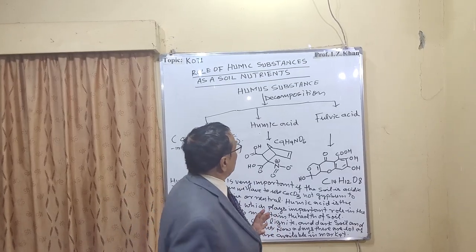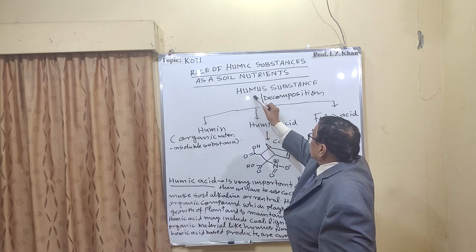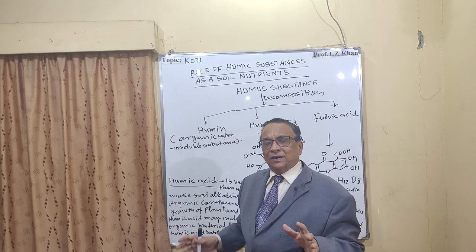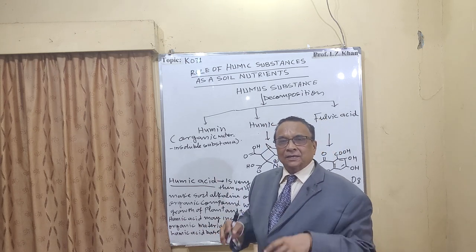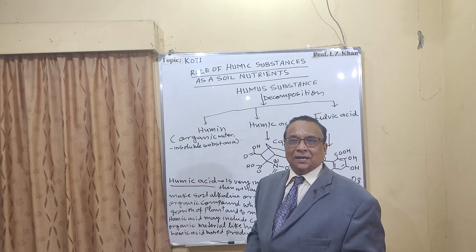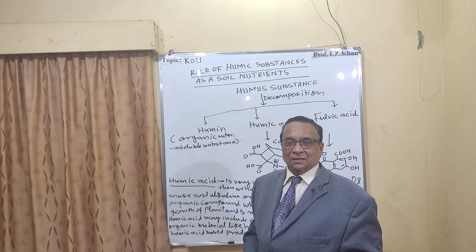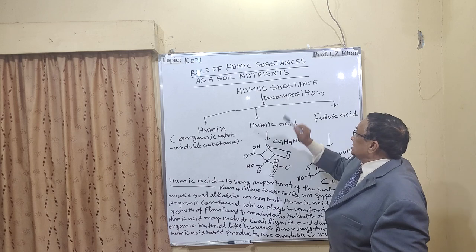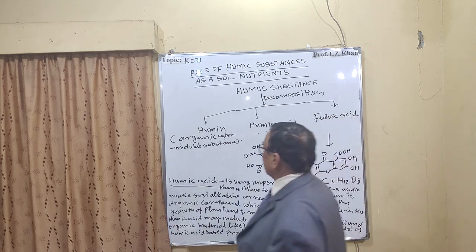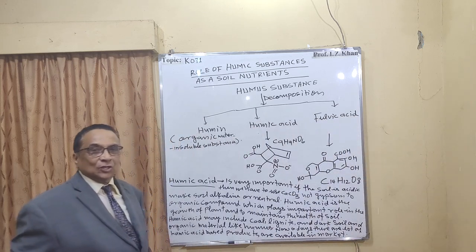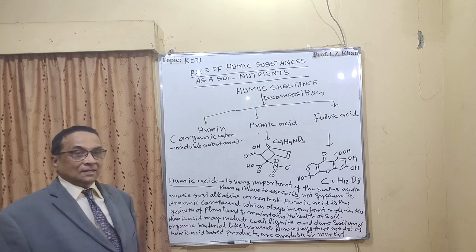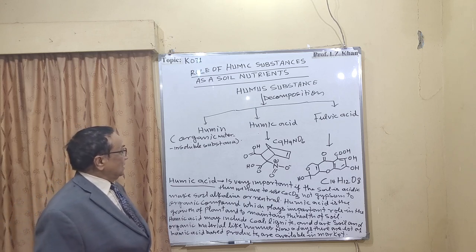Humus substance means all those loaded materials in the forest — anywhere, for hundreds and thousands of years, all the leaves are falling, animals are dying and deposited — that whole material, after decomposition by organic microbes, is called humus. After decomposition, this humus is changed into three types of organic substances. The first organic substance is called humin. Humin is actually a mixture of some organic substances that is water insoluble — that is called humin.